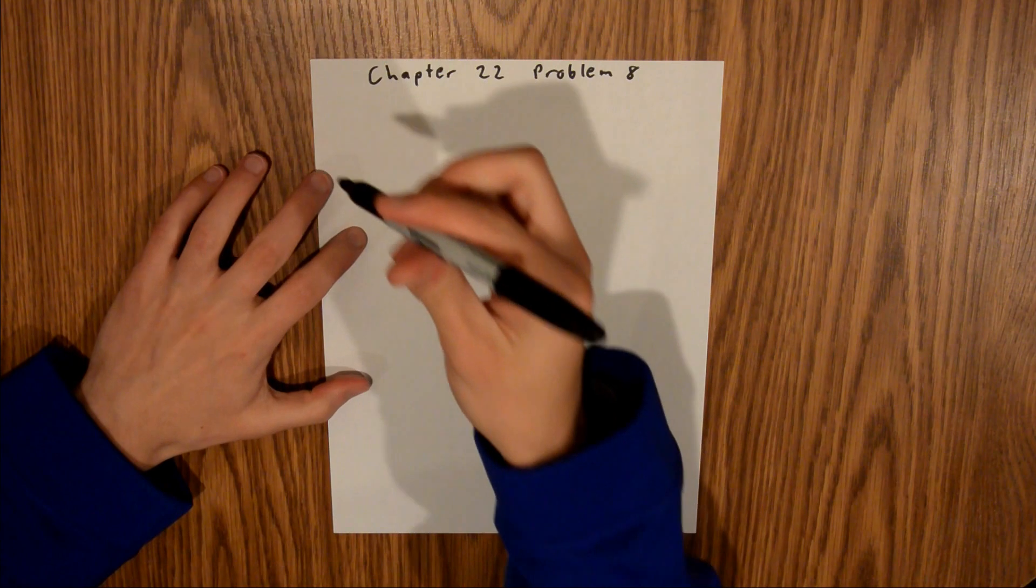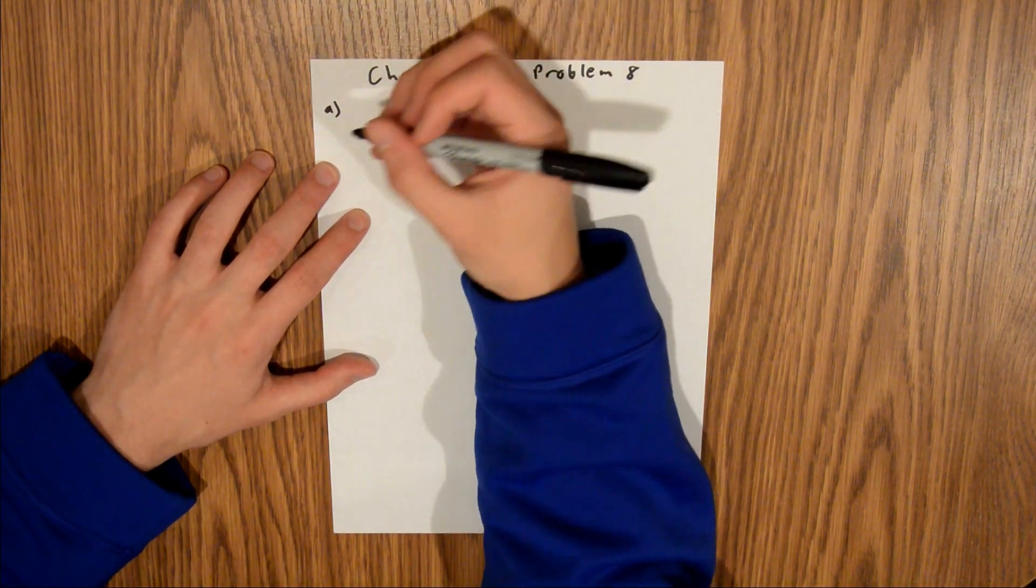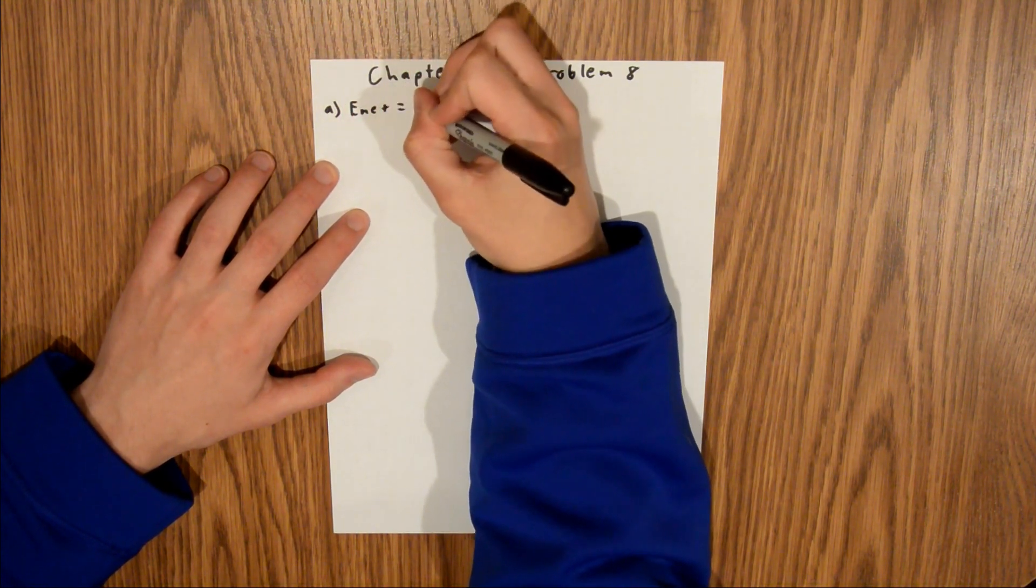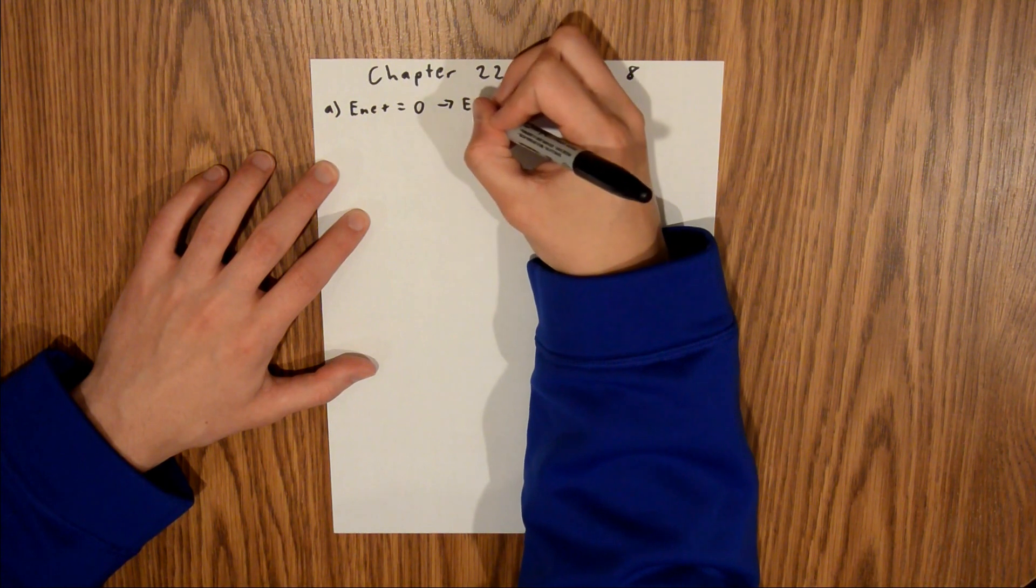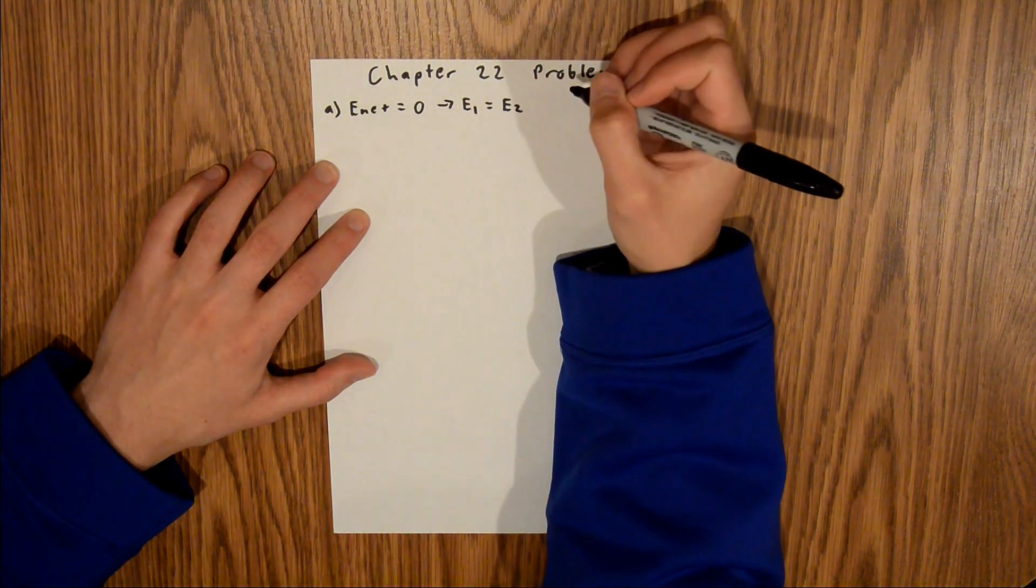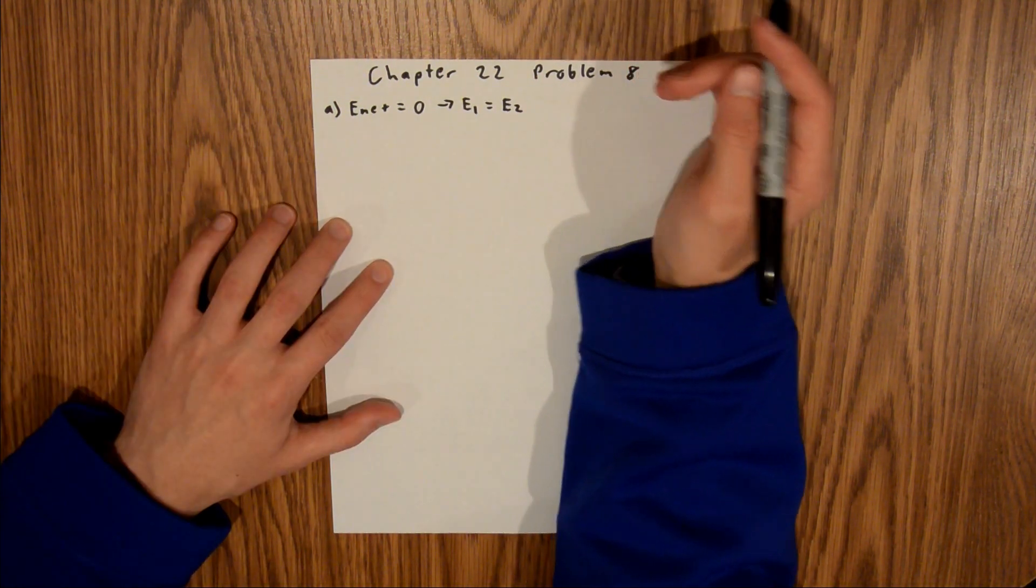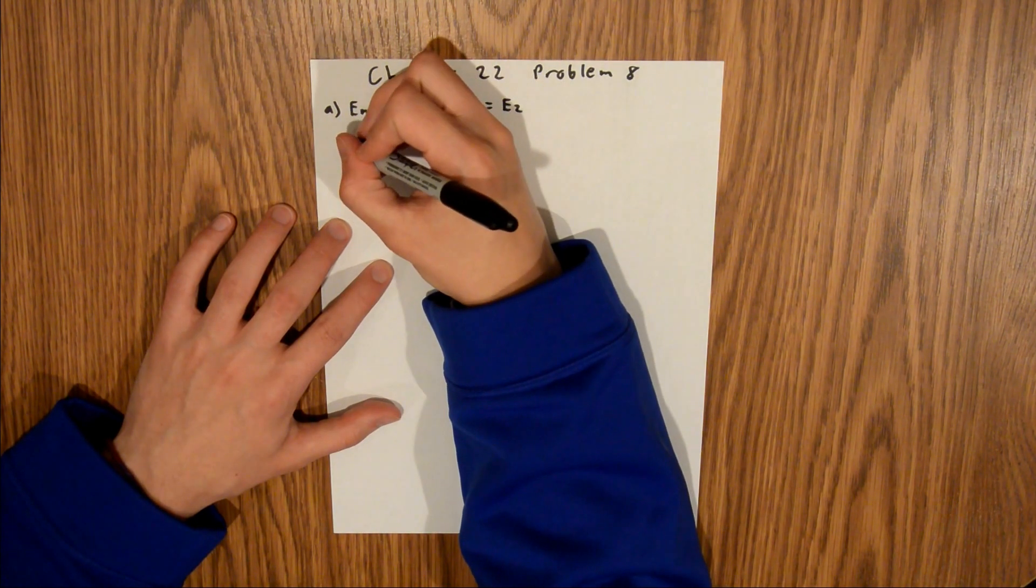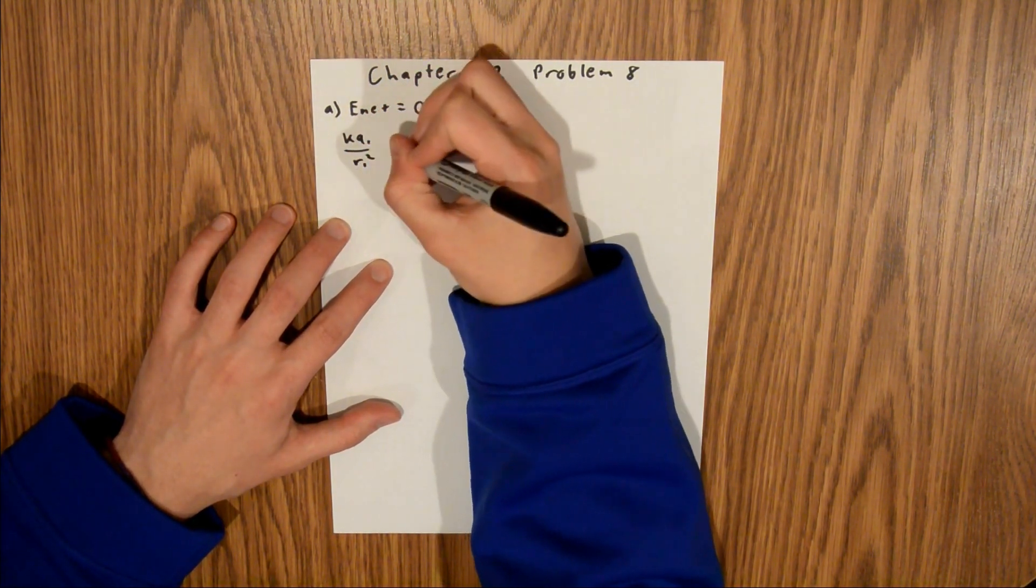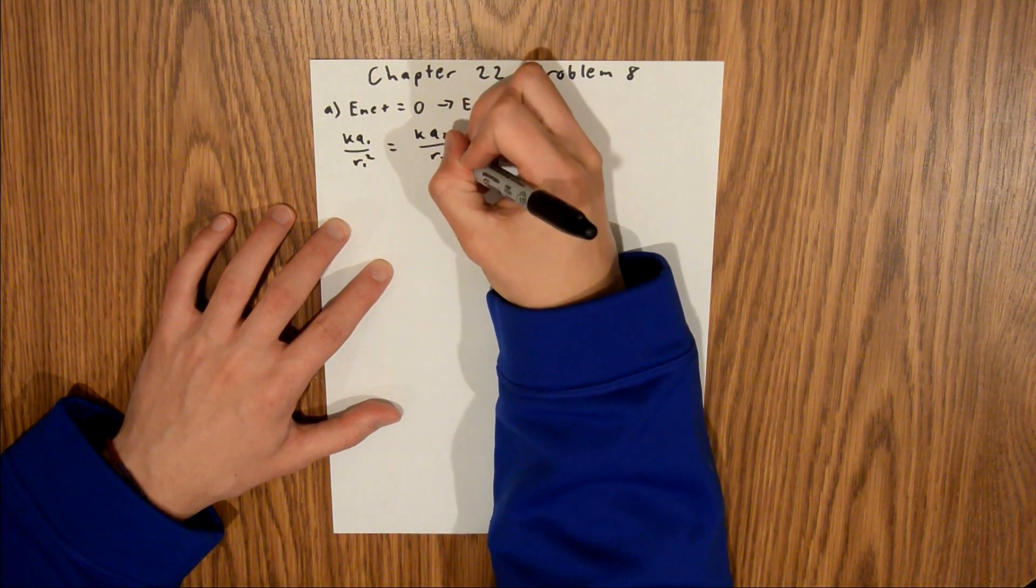And so, for part A, we're finding the spot in which E_net is zero, so E_net is equal to zero, which means that the electric field of particle one is equal to the electric field of particle two at that specific point between the two particles. And so, we can write those out, and say kq1 over r1 squared is equal to kq2 over r2 squared.